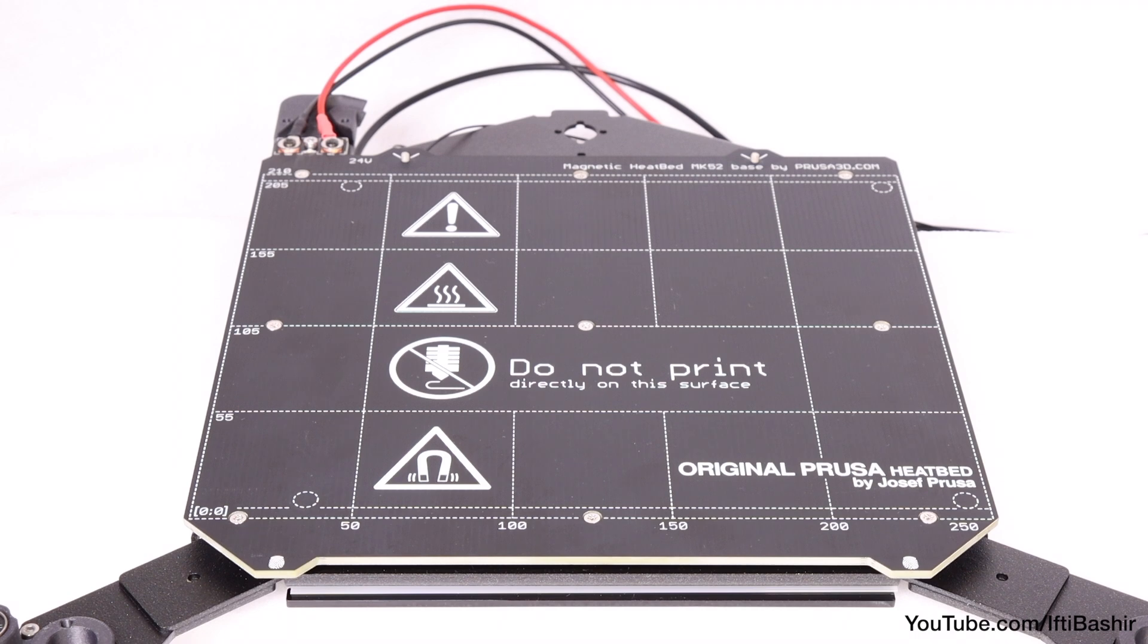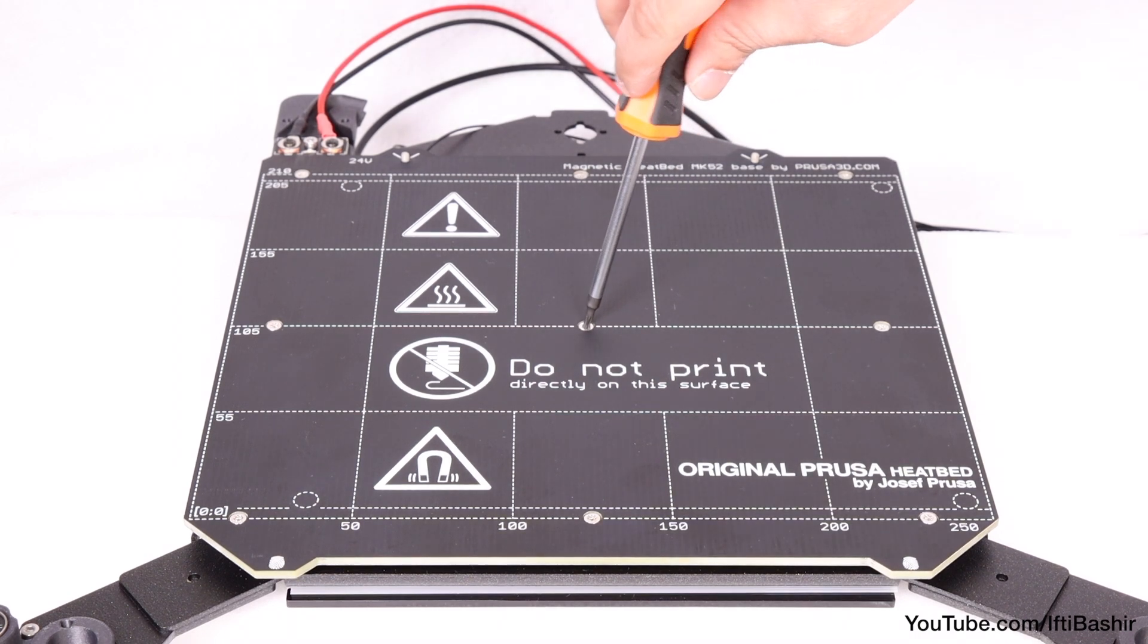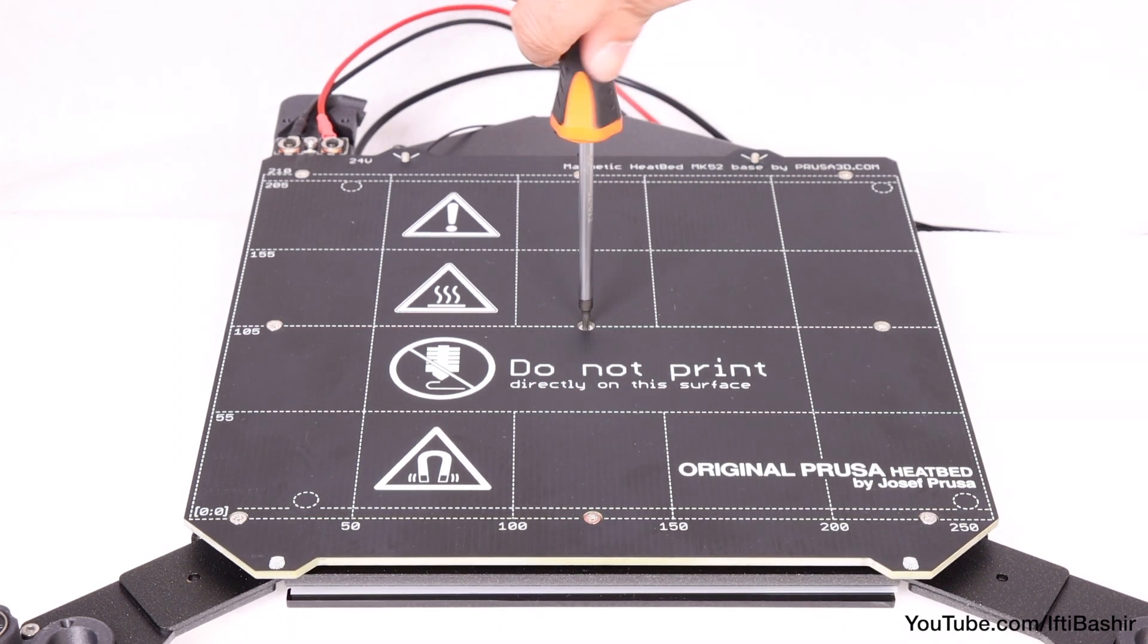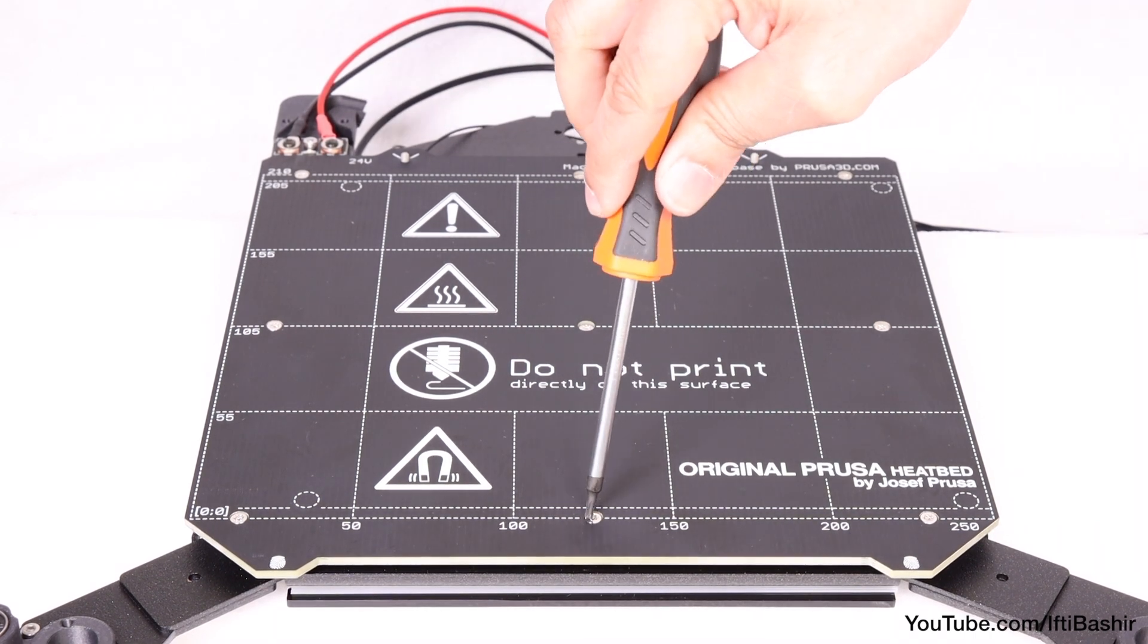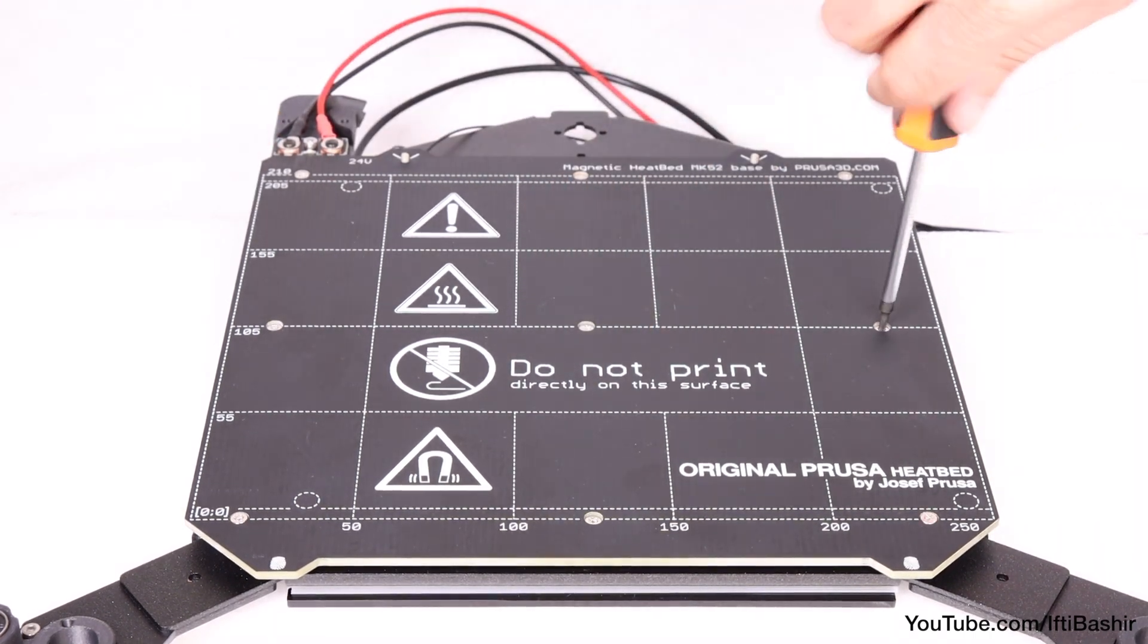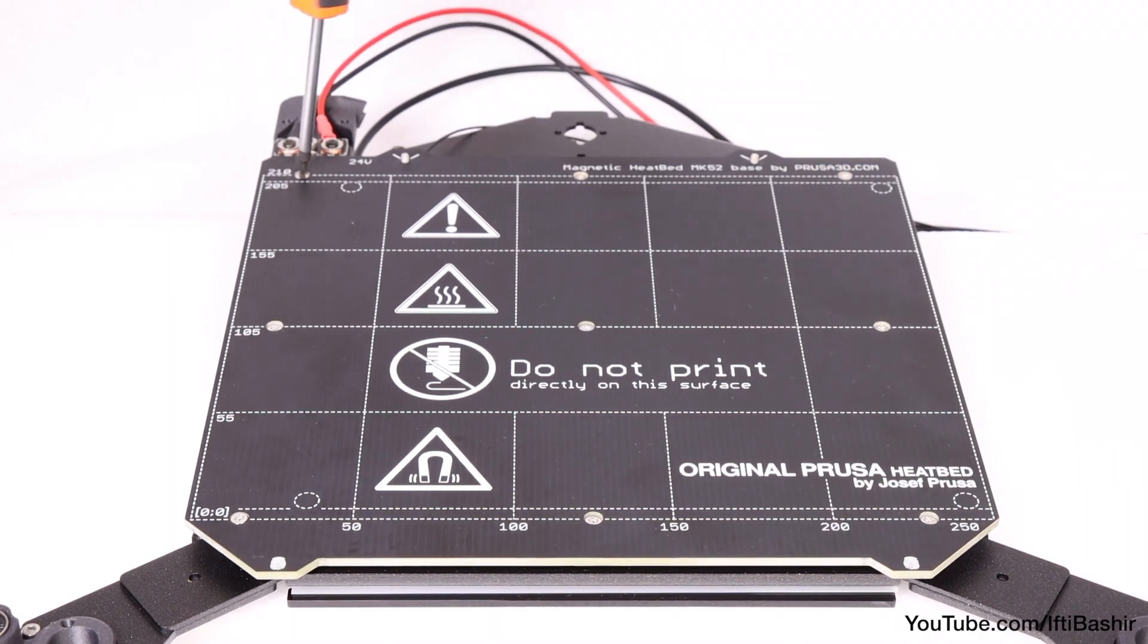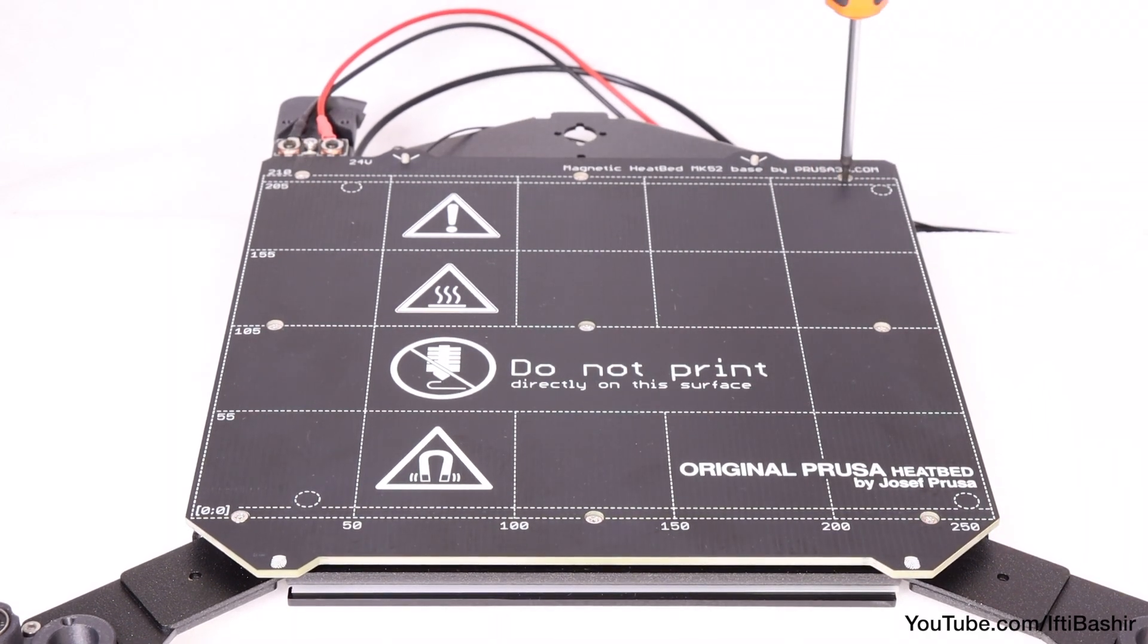With all in position, we need to tighten in a specific sequence, so that the bed is as flat as possible. Go ahead and secure the center screw, followed by the four side screws, and then the four corner screws, tightening all gently, but firmly.